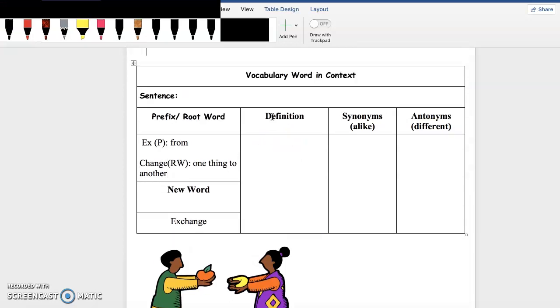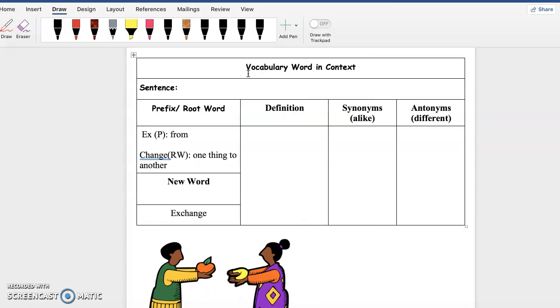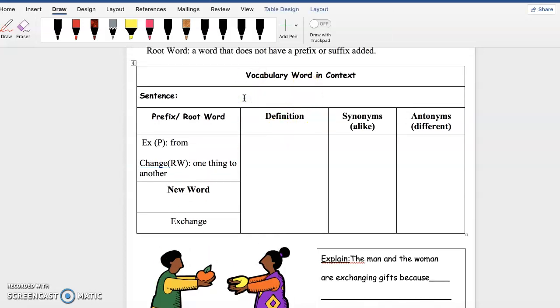Let's go ahead. When we put ex and change together, we create the new word exchange. So the definition for exchange would be basically to give one thing and receive another from someone. So you see how both of those words come together to make the new word. When you exchange something, you're giving one thing and you're receiving another thing. So let's go ahead and create the sentence. You can use my sentence or you can create your own. We love to exchange bracelets.